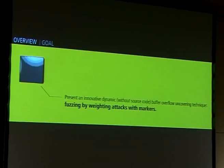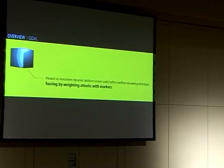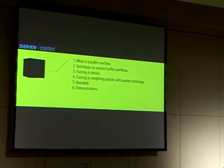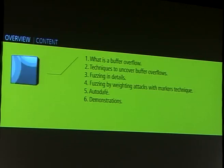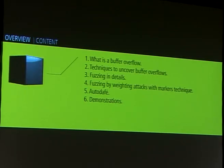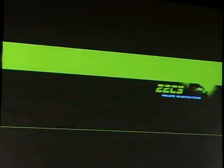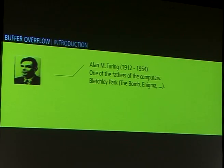The idea, as you have probably seen yesterday, another guy, Martin Jones I think, presented new techniques and gave a sort of state-of-the-art of techniques used to find buffer overflows, but in this case we never have source code. The idea is to test software under, for example, Microsoft Windows, but under GNU too. First, I will say what a buffer overflow is. Then I will give the state-of-the-art techniques used to uncover buffer overflows. We will see exactly what fuzzing is. Then I will present the technique called fuzzing by weighting attacks with markers, an implementation of this technique, and finally just two demonstrations.